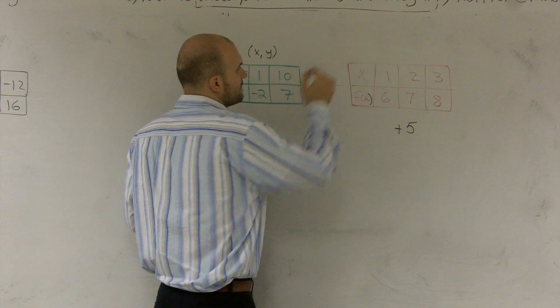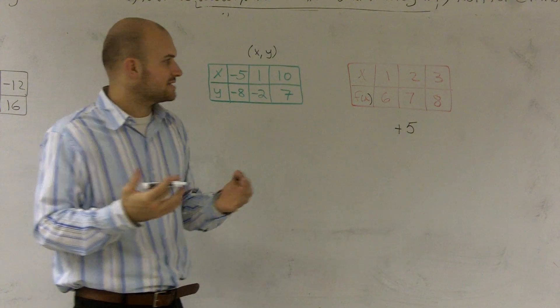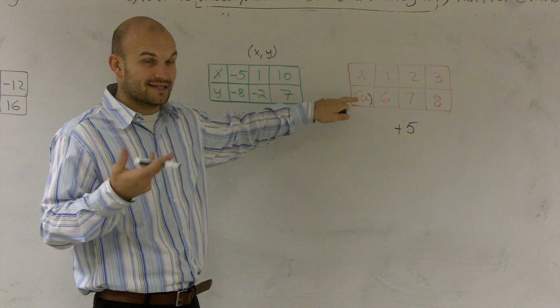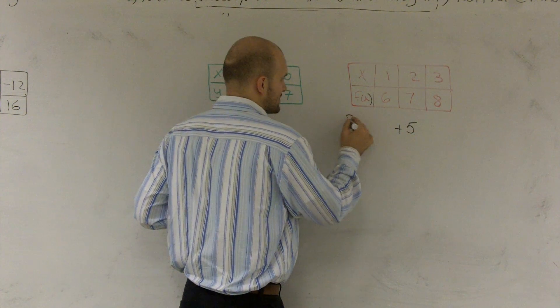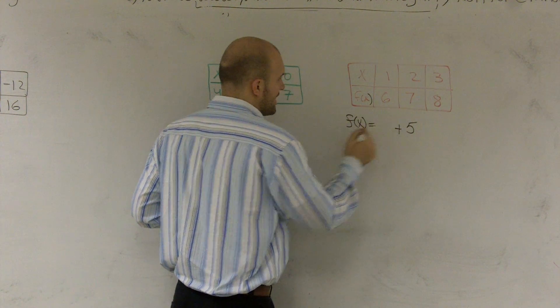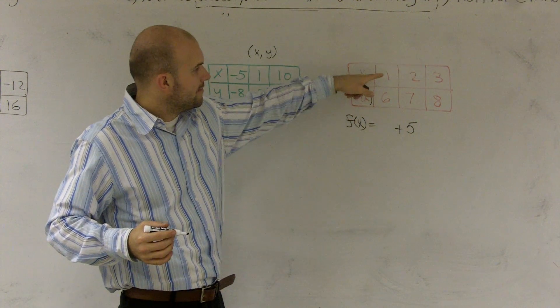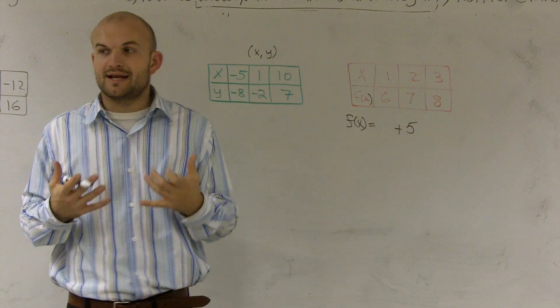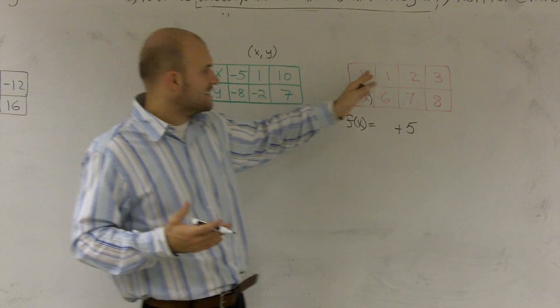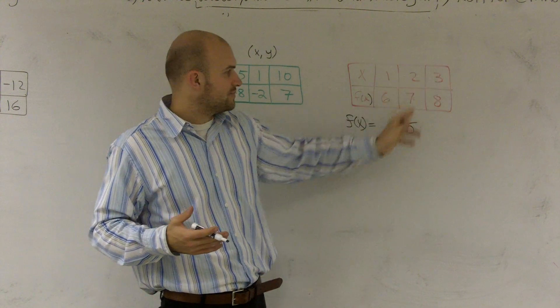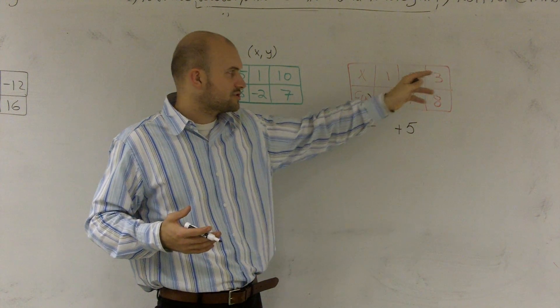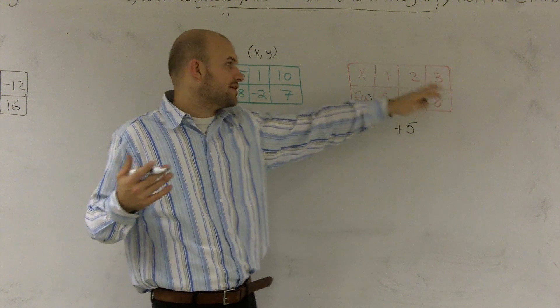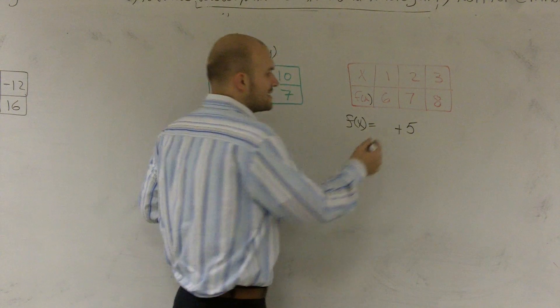If you remember what a function is, our f of x is the name of our function, or we're going to call it the name of the rule. So we're going to say f of x equals. My output equals this number plus 5. I need a way to represent all of these different values. We know it works for 1, 2, and 3, and subsequently it's going to work for the rest of my x values. So therefore, I can say any value x,